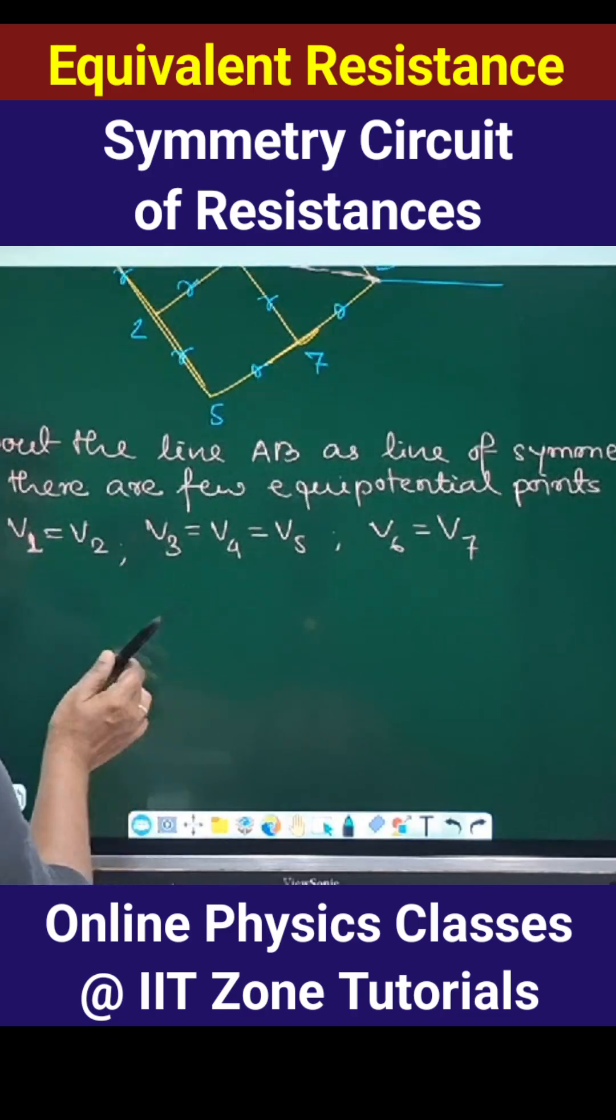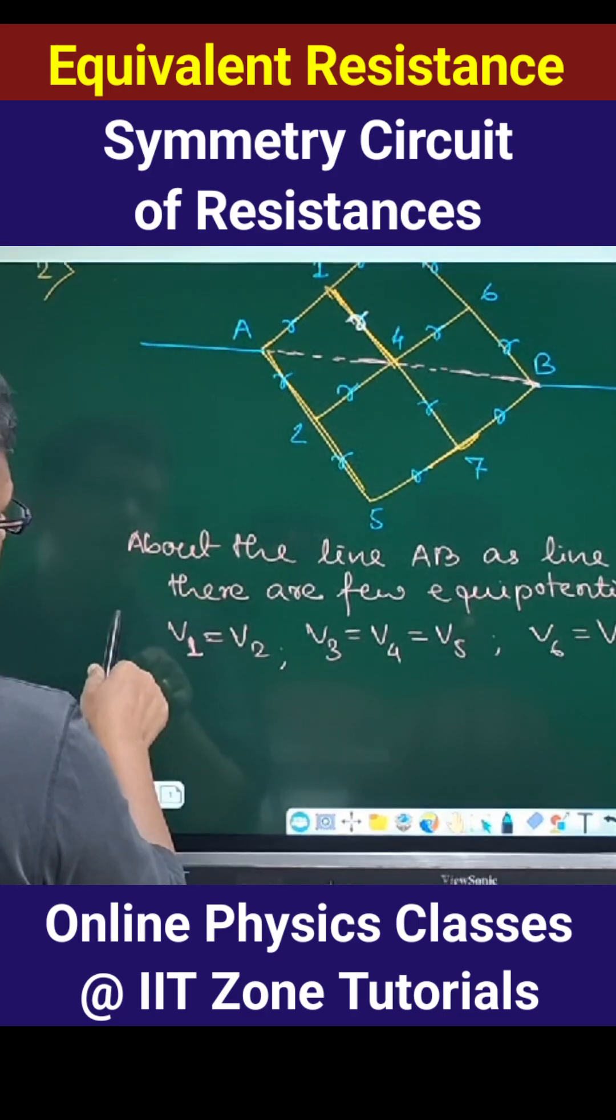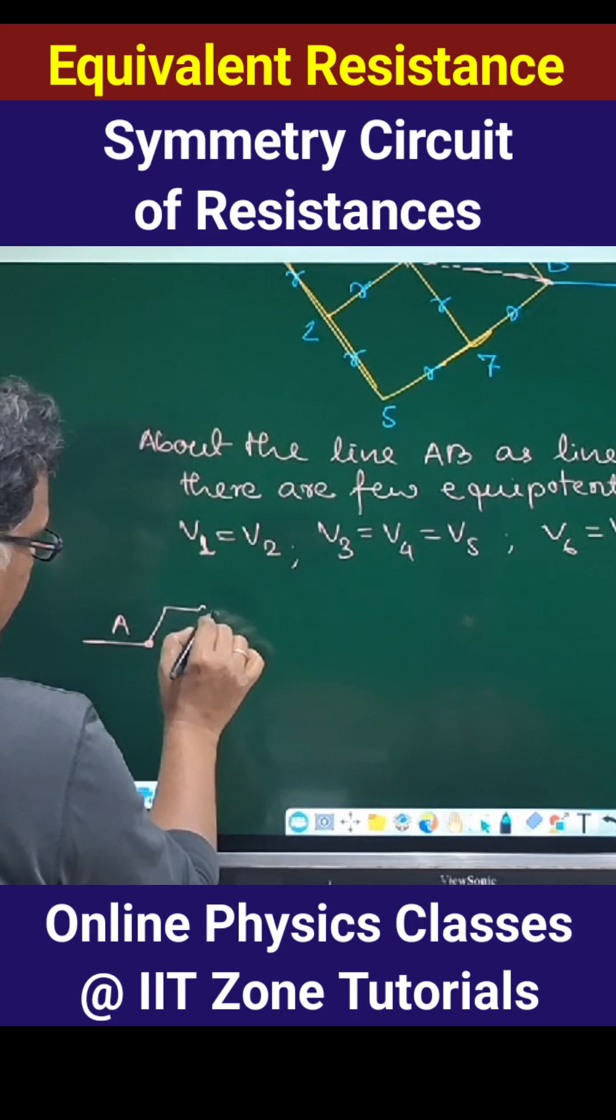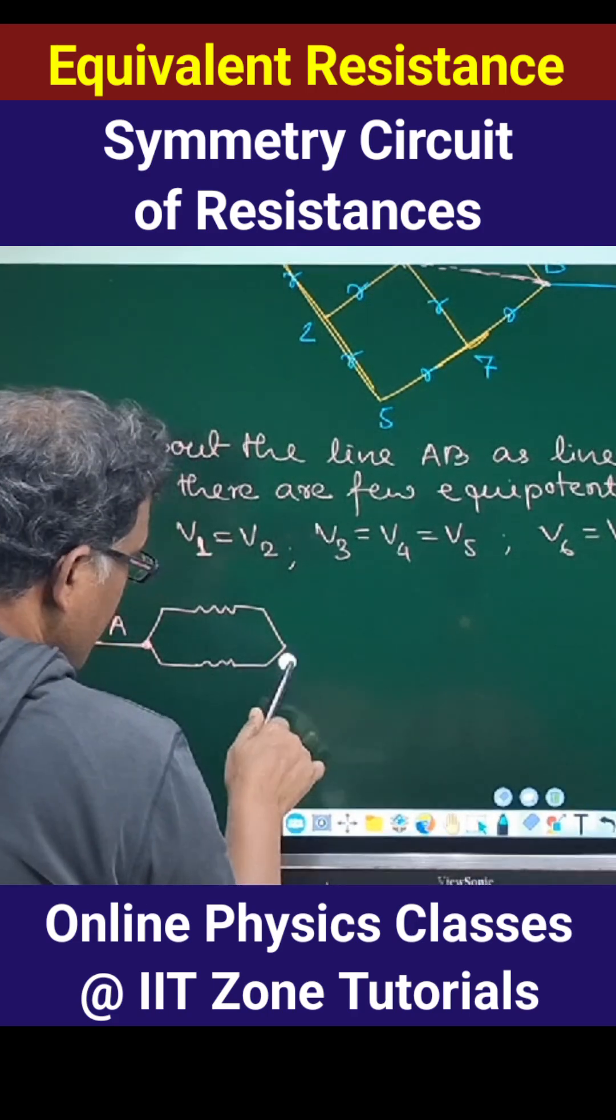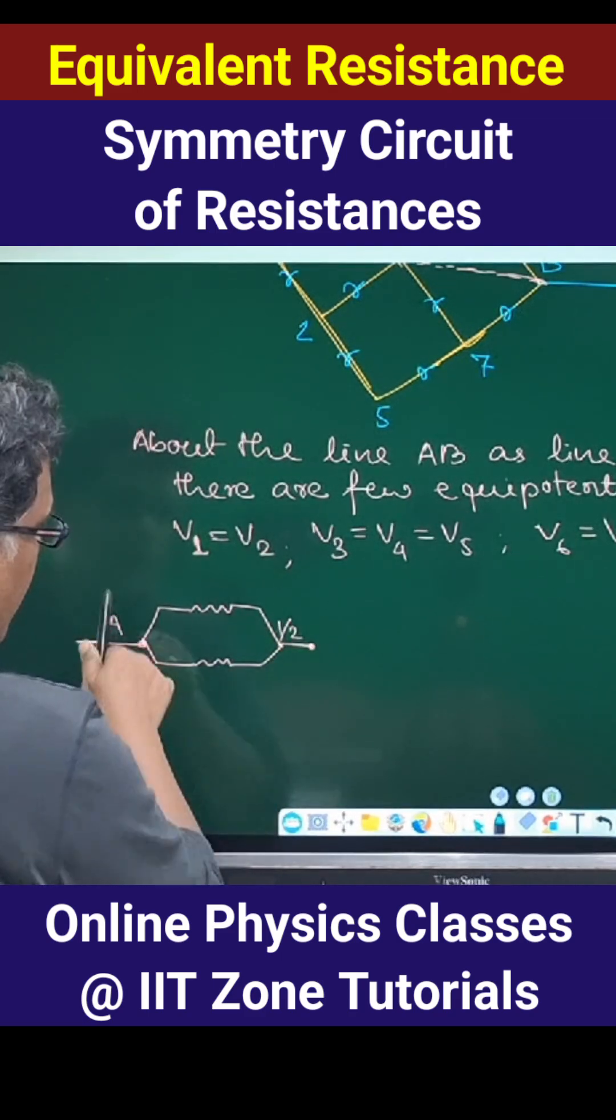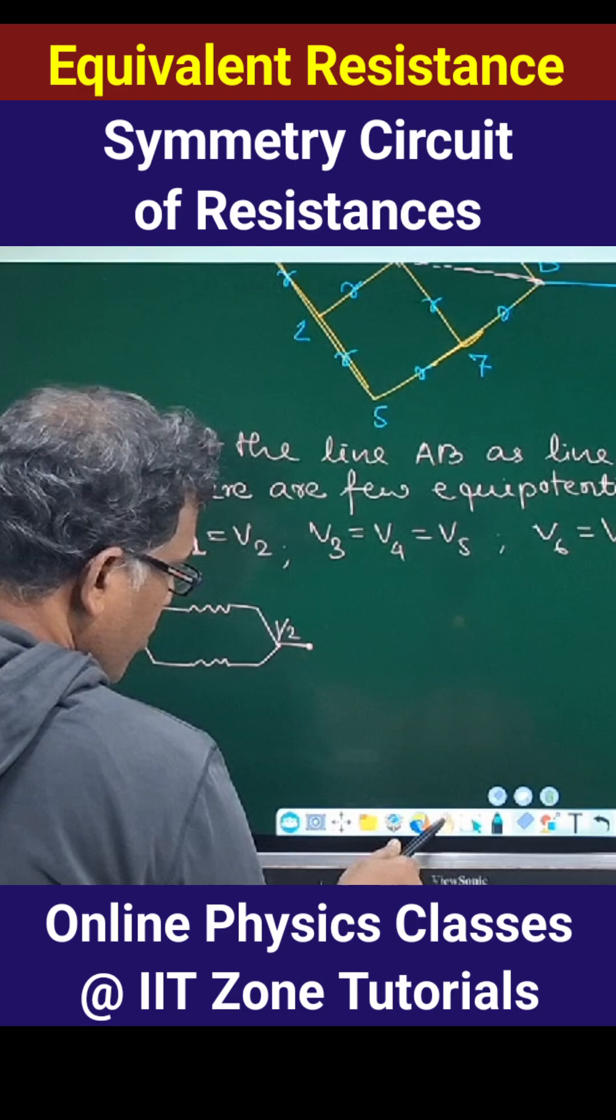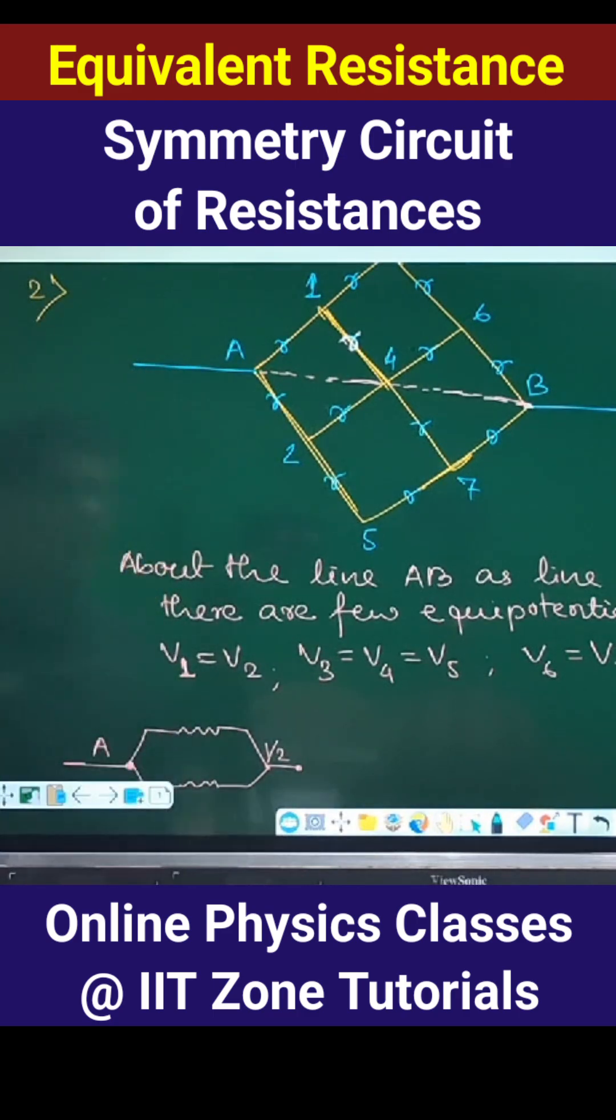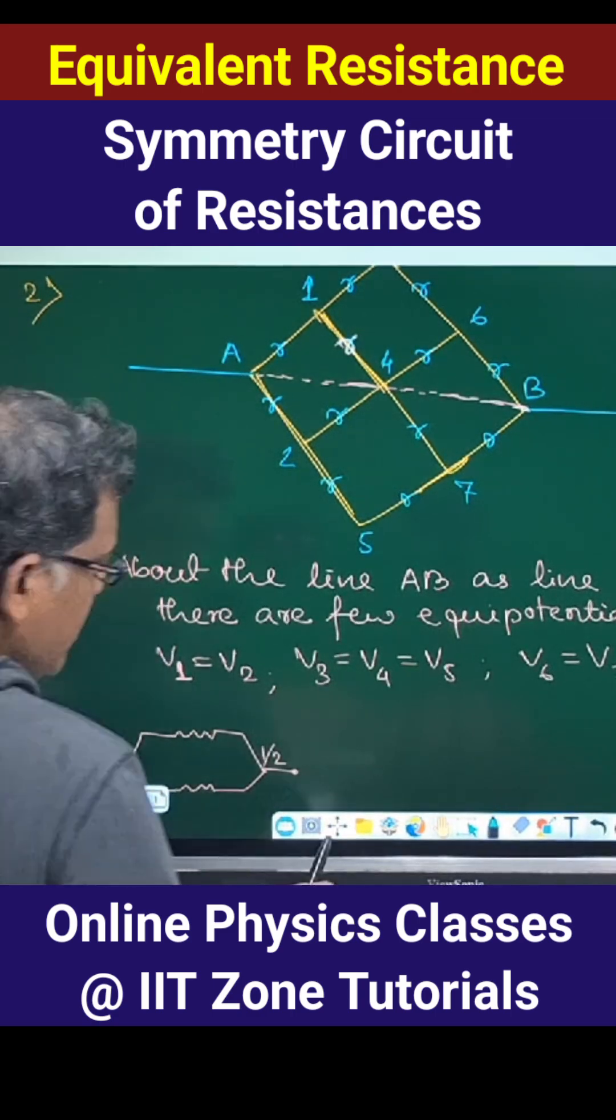We can connect them like this. So this will be the junction of 1 and 2, right? Then from 1 and 2, we do have connections to 3, 4, 5. How many connections are going? One to 3, two to 4, two to 5. So total four connections, yes or no? That means there will be four resistances.